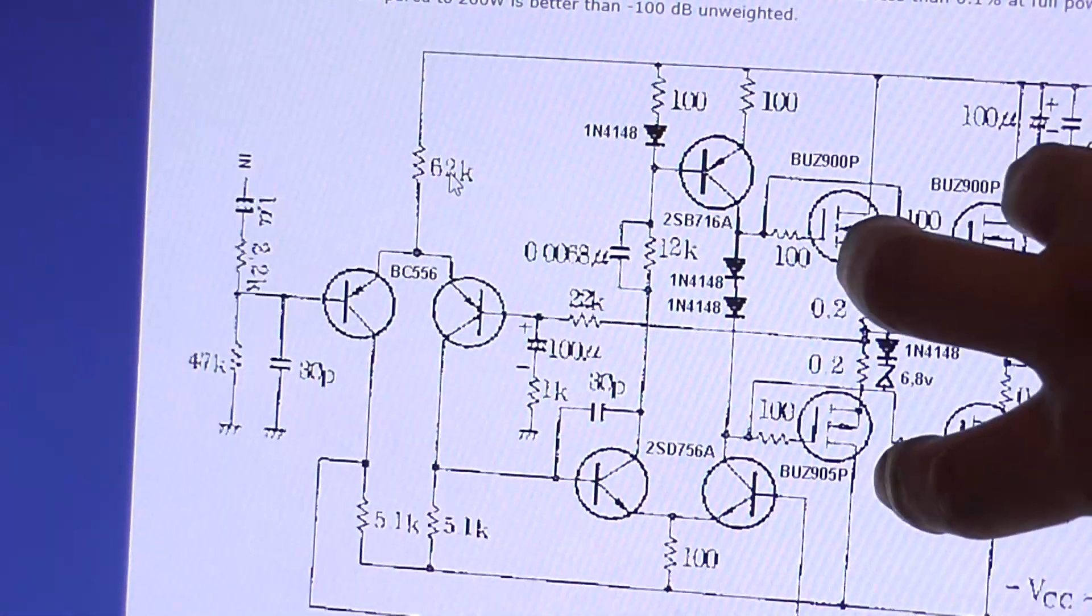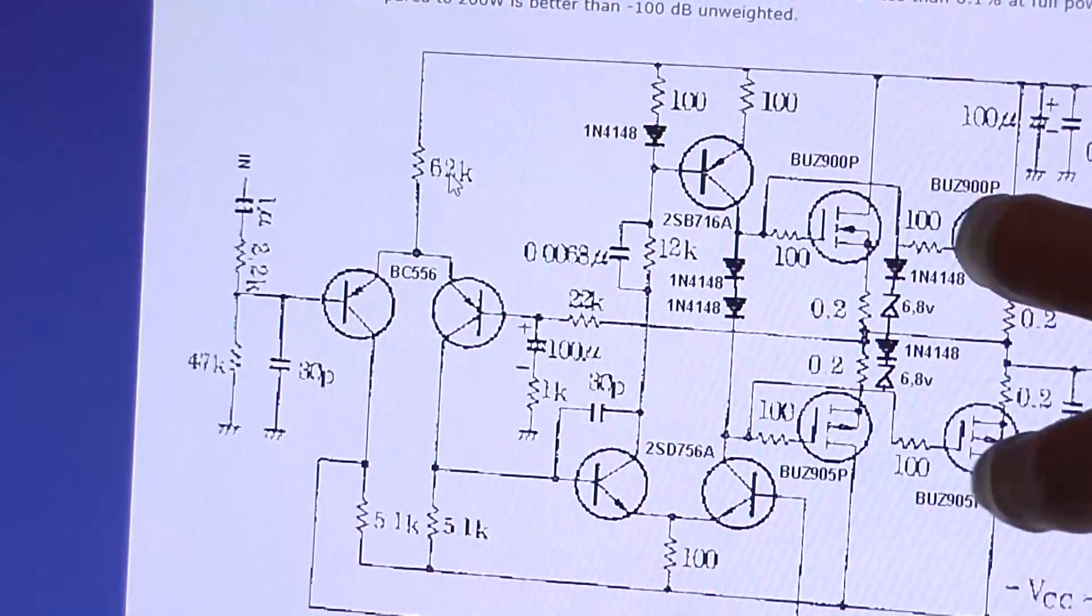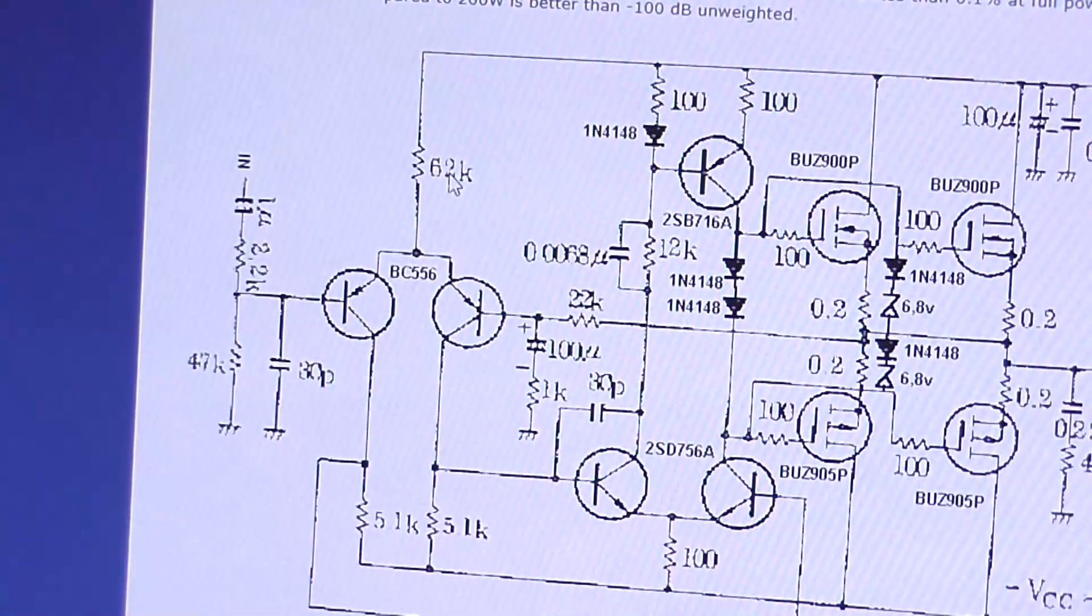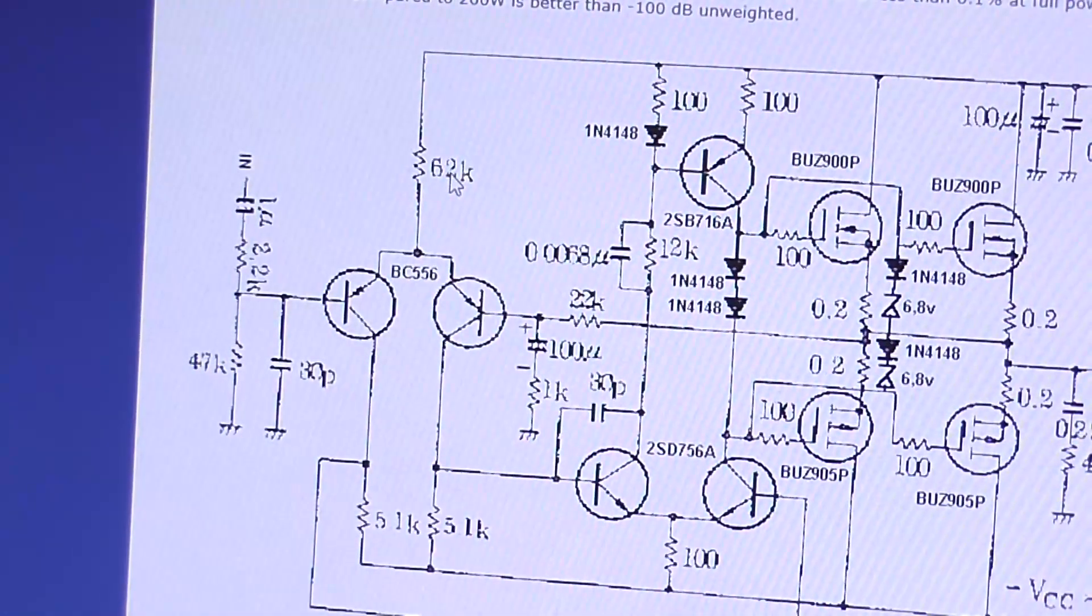Now it shouldn't make a difference that I'm only using one set of output devices and not have them paralleled. It shouldn't for this low voltage make a difference. One set of transistors should be able to do the job.